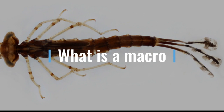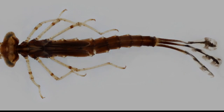Macroinvertebrates. Macroinvertebrates can be found in different environments like fire, aquatic, and water. Macroinvertebrates are a biotic group with no backbone. A mackerel is small but visible and lives in fresh water.